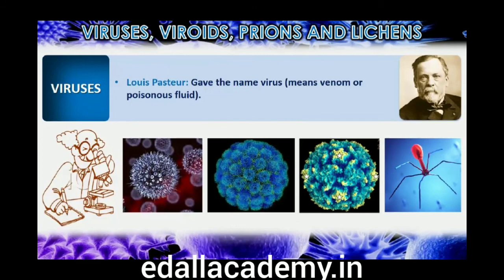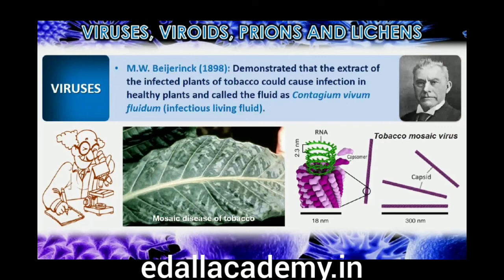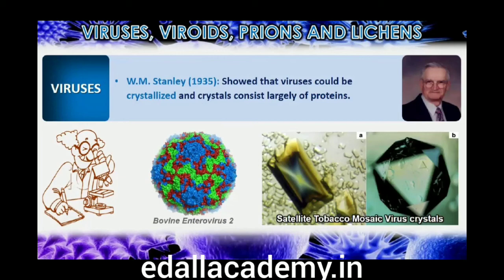The name virus, meaning venom or poisonous fluid, was given by Pasteur. D.J. Ivanovsky (1892) recognized certain microbes as the causal organism of the mosaic disease of tobacco. These were found to be smaller than bacteria because they passed through bacteria-proof filters. M.W. Beijerinck (1898) demonstrated that the extract of infected tobacco plants could cause infection in healthy plants and called the fluid contagium vivum fluidum (infectious living fluid). W.M. Stanley (1935) showed that viruses could be crystallized and that crystals consist largely of proteins. They are inert outside their specific host cell. Viruses are obligate parasites.